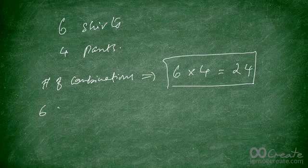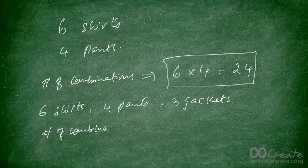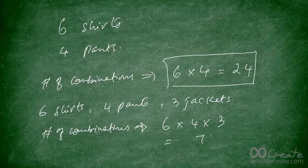Now let's say that you have six shirts, four pants, and also three jackets. The question asks: how many combinations can you now create, assuming that you wear one of each item? The answer is going to be six times four times three, which is equal to 72. So you can create 72 different combinations using your six shirts, your four pants, and your three jackets.